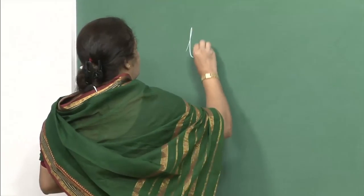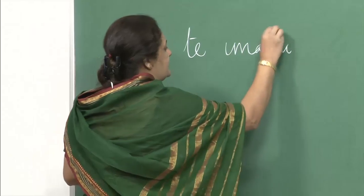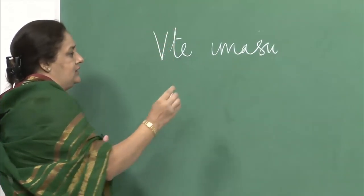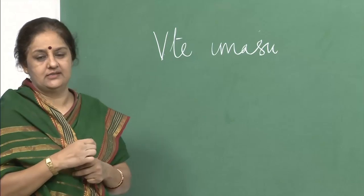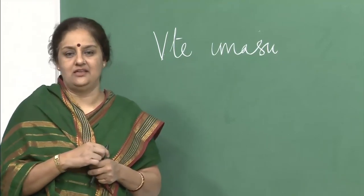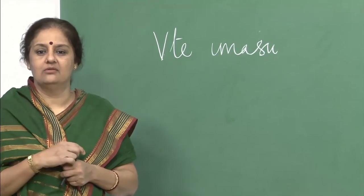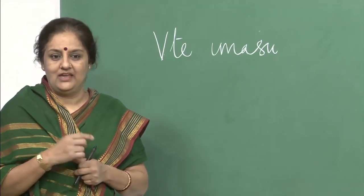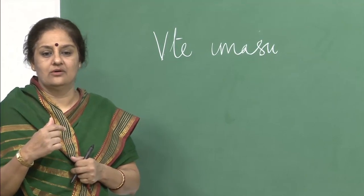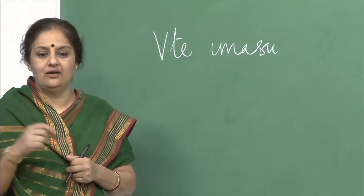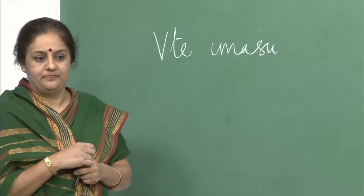We were doing the te-imasu form of the verb — te-imasu, which is continuous tense. Ima watashi wa tatte imasu. Ima minasan ni oshiete imasu. Ima minasan wa watashi wo kiite imasu. Shukudai wo shite imasu. Suwatte imasu. Te-imasu is simple and easy to understand — present continuous tense where an action is in progress.